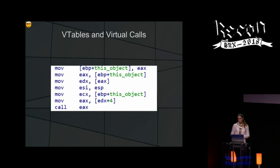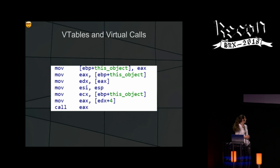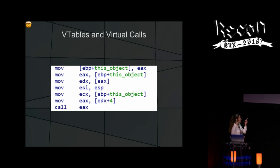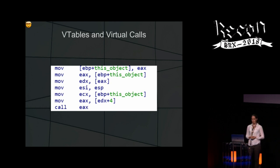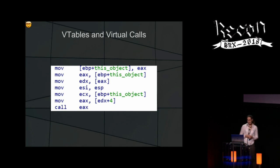Vtables and virtual calls. Here you can see a virtual call at the end: call EAX. One instruction backward you can see that EDX, which contains the Vtable base pointer, sets the second function at the fourth byte offset into EAX. This is the main problem I wanted to solve while reversing C++.